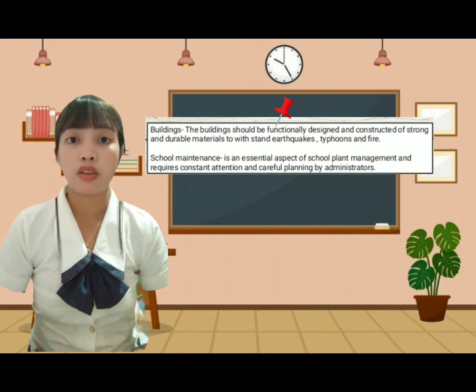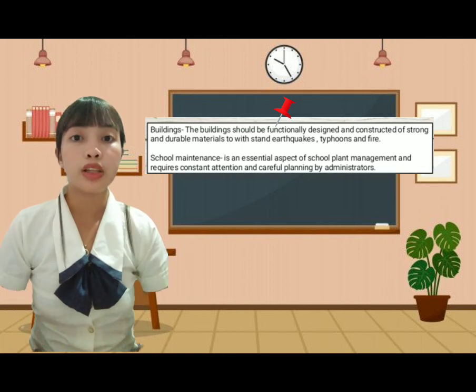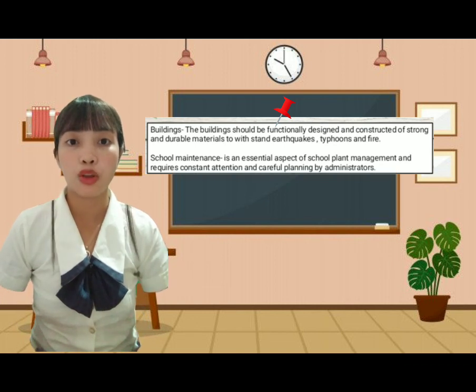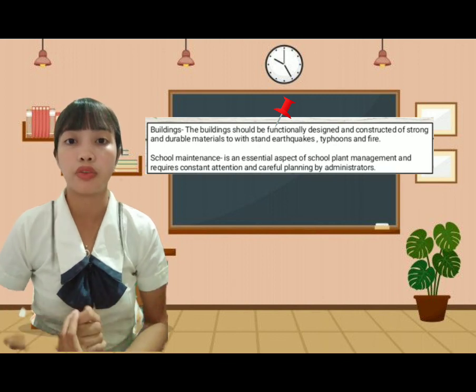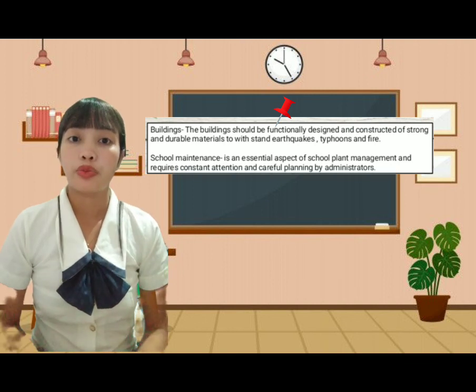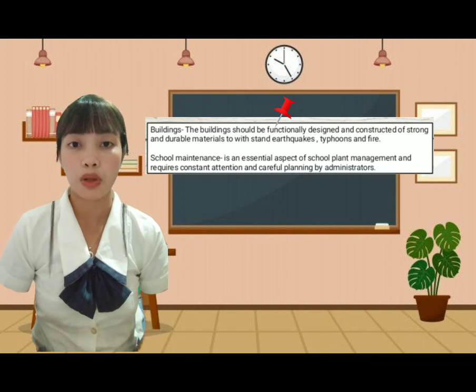Learning takes place effectively in an environment in which the learner feels safe and secure. Toilet and other sanitation facilities should be provided to meet the needs of students. School administrators must ensure proper maintenance of the school plant in order to facilitate the effective teaching process. School plant maintenance refers to the keeping of the school site, buildings, and equipment in as near the original state of utility as possible. Thank you for your participation today — we genuinely appreciate it and we hope you learned something.